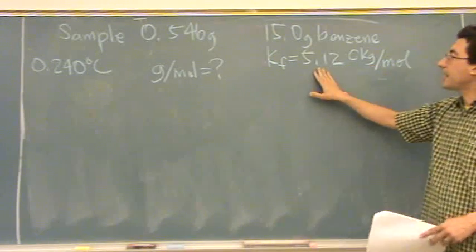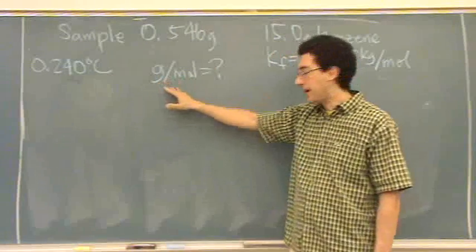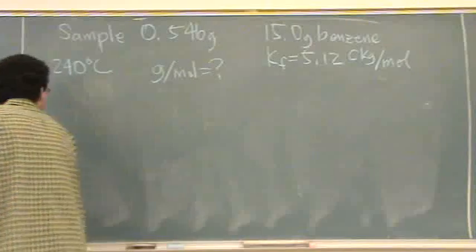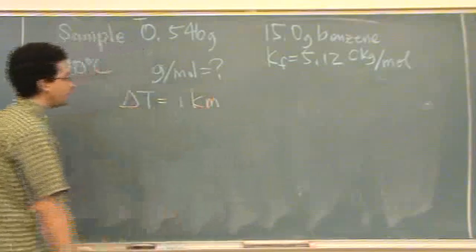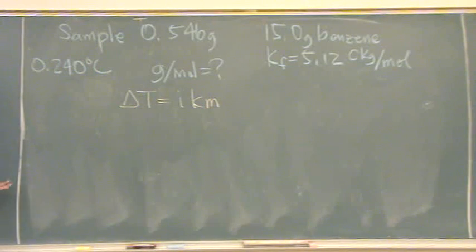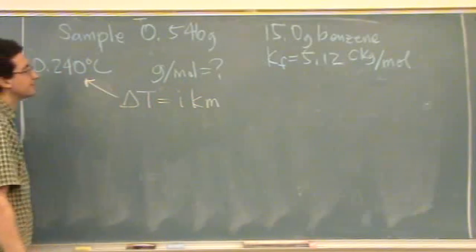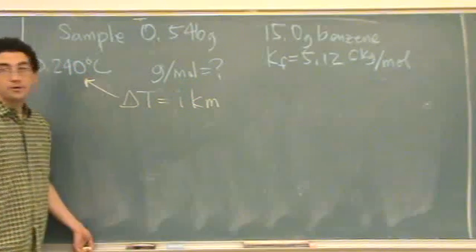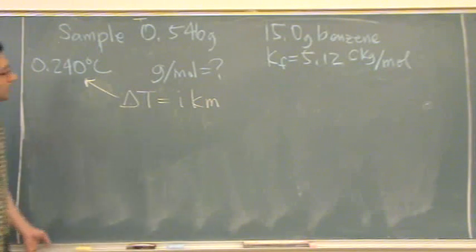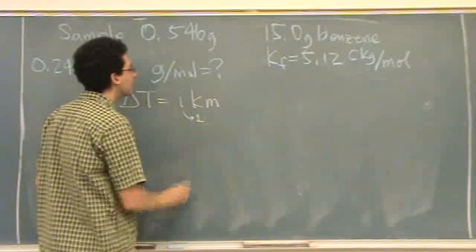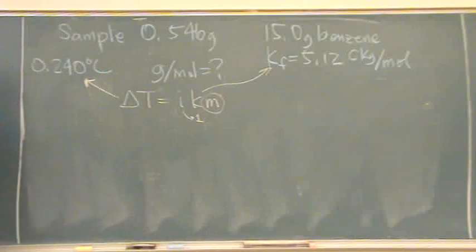Okay, so here's the KF. We know the freezing point depression. We want to know the molar mass. So let me write down the equation. Delta T is IKM. It has to be that they give you a KF, it's got to be this equation. Delta T is right there. I, I'm supposing it's one because benzene is inorganic. So I'm going to suppose that this is one. K is right there. And then hidden inside M is going to be our answer.